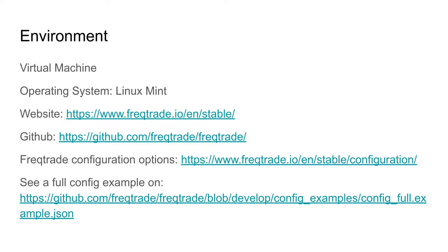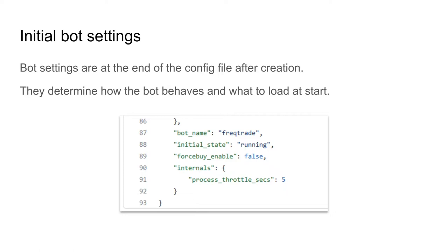First I'm going to explain some global configuration parameters. These parameters only give FreqTrade instructions on how to behave on your system and where to look for files and such. After you have created a new configuration file with the FreqTrade command newconfig, the generic bot settings will be at the end of the file. The FreqTrade development team apparently thought it was best to place this section at the end.